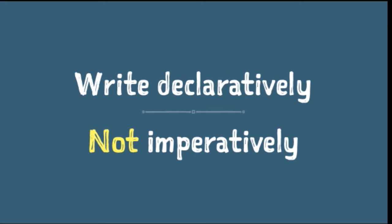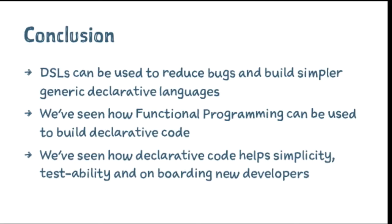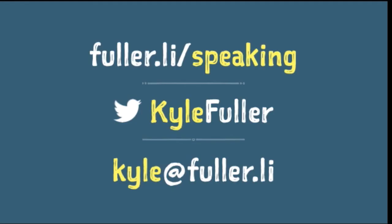Apple has given us a fresh slate with Swift to rethink how we write our code — a chance to explore these new declarative concepts. In conclusion, DSLs can be used to reduce bugs and build simpler generic declarative languages, and functional programming can be used to build declarative code. Writing declarative code helps simplify and improve testability, and helps our code be more onboardable to new developers because they don't have to understand the implementation details. All the slides, along with the source code for the examples, are available at my website, follow.li/speaking. Does anyone have any questions?